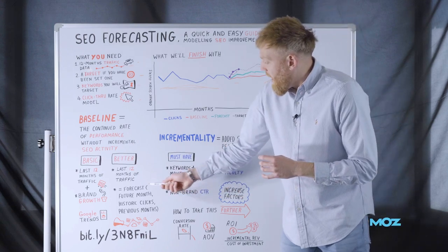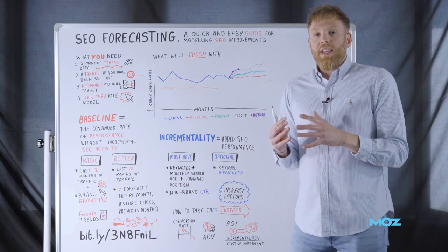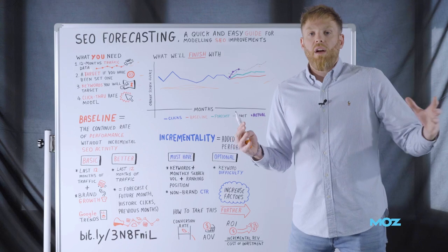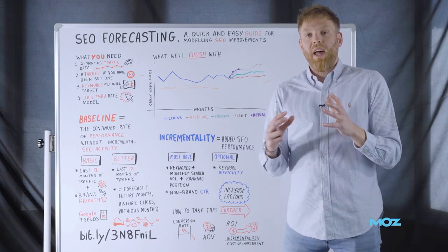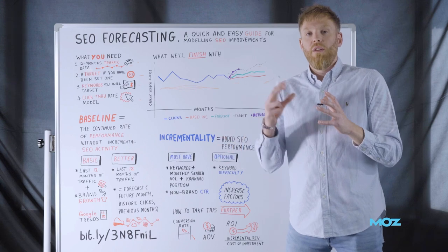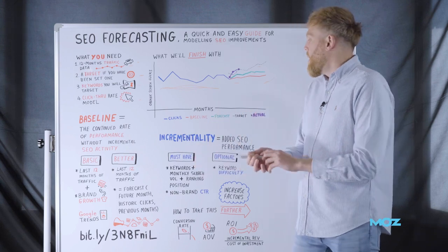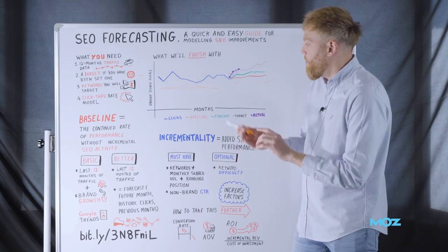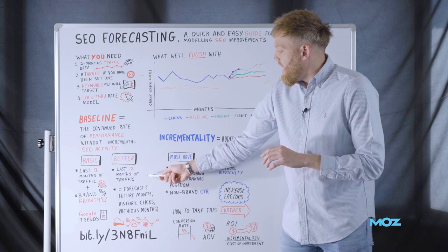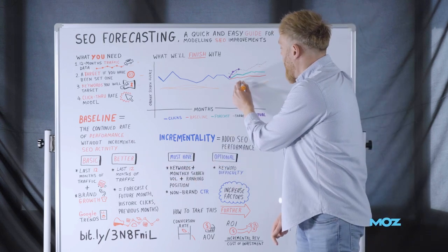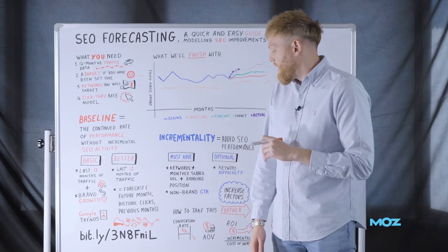It's called the forecast function. And effectively what that does is it looks at the data over the last 12 months and it starts to draw parallels from that data and begin to forecast what will happen over the next 12 month period from all of that historic data that you've fed it. This is a really powerful way to get as accurate as possible baseline from your activity.